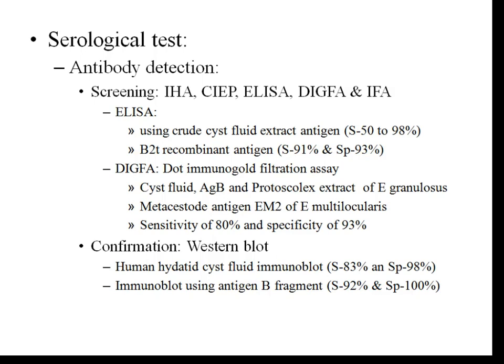Recently, a dot immunogold filtration assay has been introduced, which uses four antigens: three from Echinococcus granulosus — cystic fluid antigen, antigen B, and protoscolex extract — and a fourth from Echinococcus multilocularis, the metacestode antigen EM2. This allows simultaneous detection of both Echinococcus granulosus and Echinococcus multilocularis. The assay has a sensitivity of 80% and specificity of 93%.